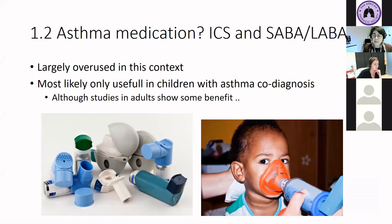Regarding asthma medication — inhaled corticosteroids and short and long-acting beta-2 agonists — in the country where I work, I think this is largely overused in this context. From the figures Diane showed, about 30% of children with non-CF bronchiectasis have asthma as a comorbidity. In many of the other children, if there's no asthma, it's most likely not useful to use these medications. Of course, if there's bronchospasm, you can relieve it. But long-term treatment with inhaled steroids should be critically reflected upon.